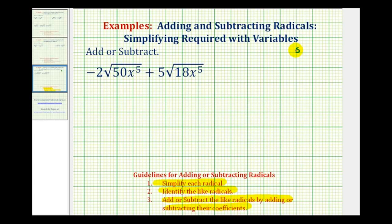Let's find the prime factorization of 50. 50 is equal to 5 times 10; 5 is prime and 10 is equal to 5 times 2, both of which are prime.